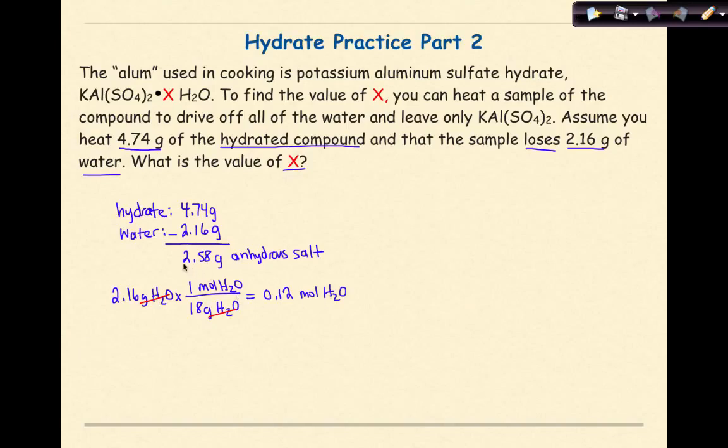The next step is taking this mass of anhydrous salt and converting it into moles of anhydrous salt. So 2.58 grams of KAl(SO4)2, and convert that into moles. One mole KAl(SO4)2 has a gram formula mass of 258 grams. So again, I'm going to check that my units cancel, grams cancel grams, so 2.58 times 1 divided by 258.